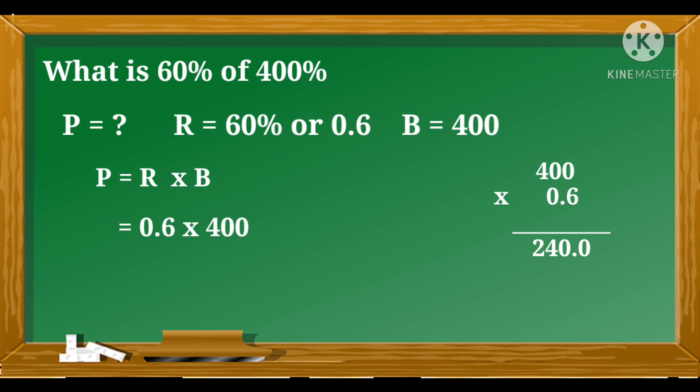Then, four times six is equal to 24. Then, count the decimal places in our factors. So, we only have one decimal place. So, we can omit the one zero in our product. Therefore, the percentage is equal to 240.